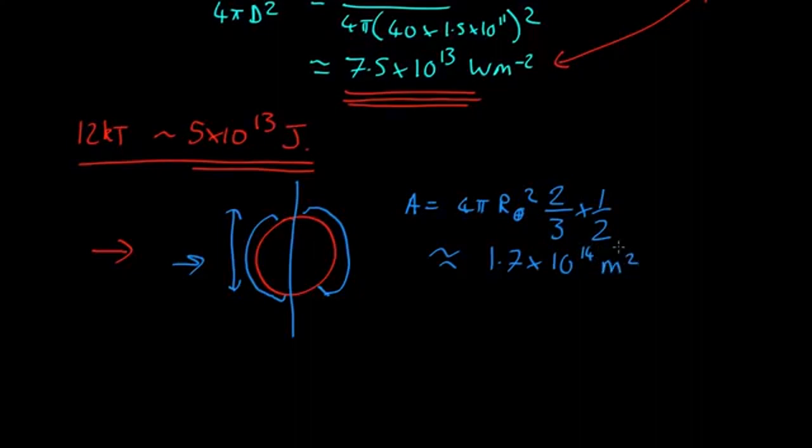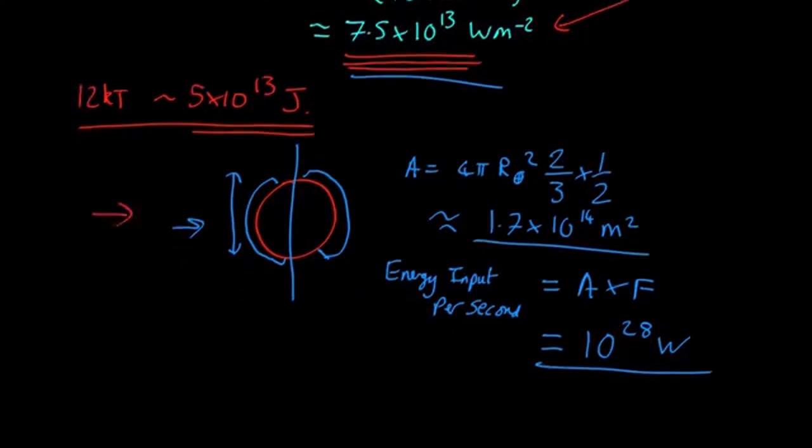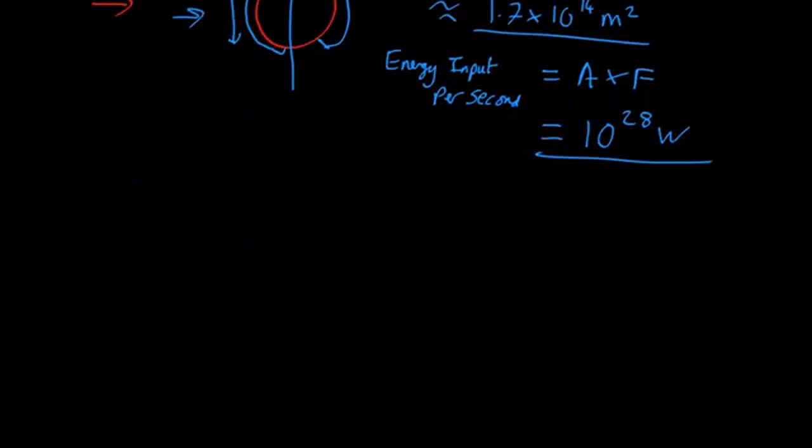How much energy is arriving? The energy input per second is equal to the area times the flux. We've got the area, we've got the flux. That comes out as about 10^28 watts. Another meaninglessly big number—10^28 is far too big for any human to know what it really means. Would that heat up the ocean?